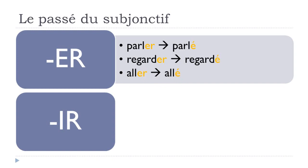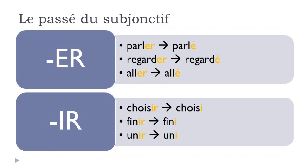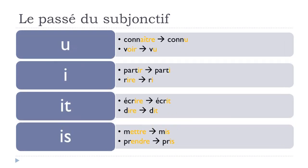For the third group, things get tricky. Some subgroups: verbs ending in forms that give -U (connaître → connu, voir → vu), verbs giving -I (partir → parti, rire → ri), verbs giving -IT (écrire → écrit, dire → dit), and verbs giving -IS (mettre → mis, prendre → pris). If you're not sure, I advise watching the dedicated participe passé video.